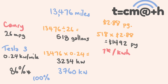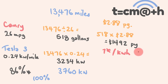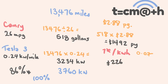So how much would that cost to charge your car? We multiply 3,234 kilowatts by $0.07 — remember, we're timesing by 0.07, not 7. Each kilowatt costs $0.07, so 3,234 times 0.07 gives us $226. We can also work this out using the 100% figure: 3,760 kilowatts times $0.07 gives us $263 per year.